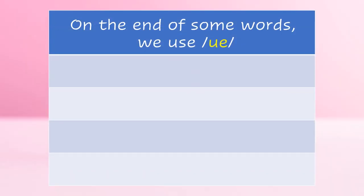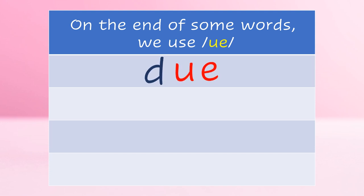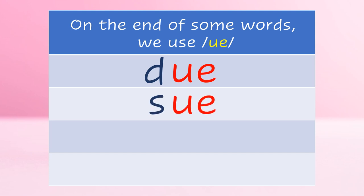On the end of some words, we use the long U sound. D-U: Do. S-U: Sue. Q-U: Queue.